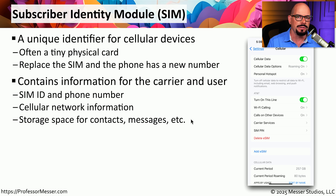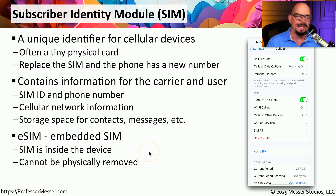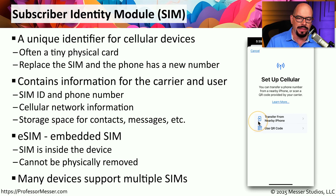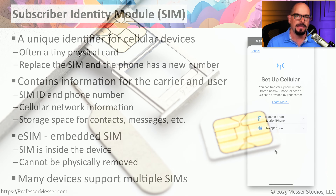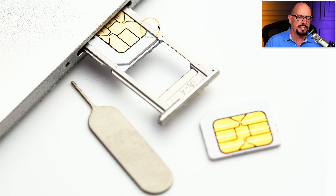There is also storage space on the SIM itself that allows you to store contacts and messages, so when you move the SIM from one phone to another, you can also move those contacts and messages. Newer phones no longer use a physical SIM card but instead use an electronic version called an embedded SIM, or eSIM. That eSIM is a physical part of the phone and can't be physically unplugged, but you can move it using the phone's software. You can add or transfer an eSIM using a QR code or by transferring from an existing phone. This phone also supports multiple SIMs simultaneously, allowing multiple phone numbers or profiles on the same device.